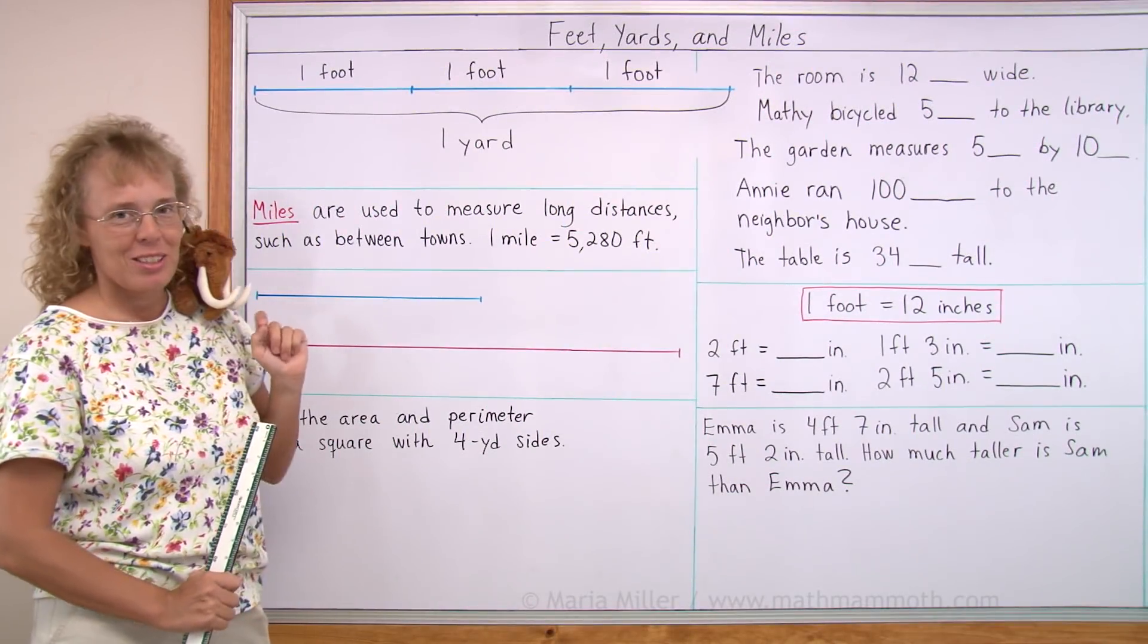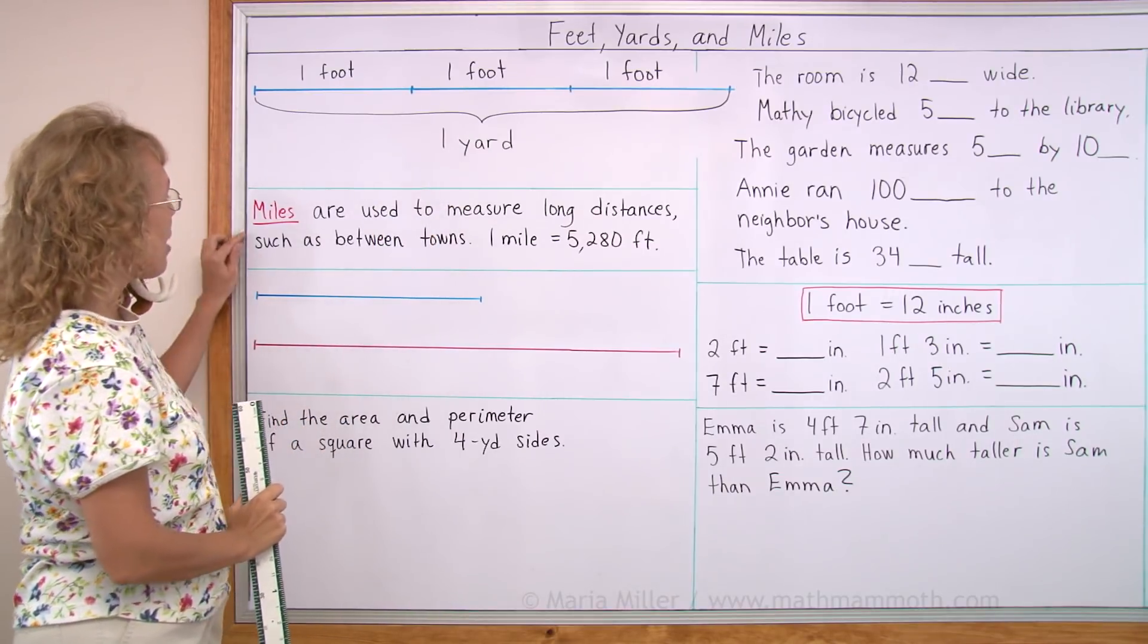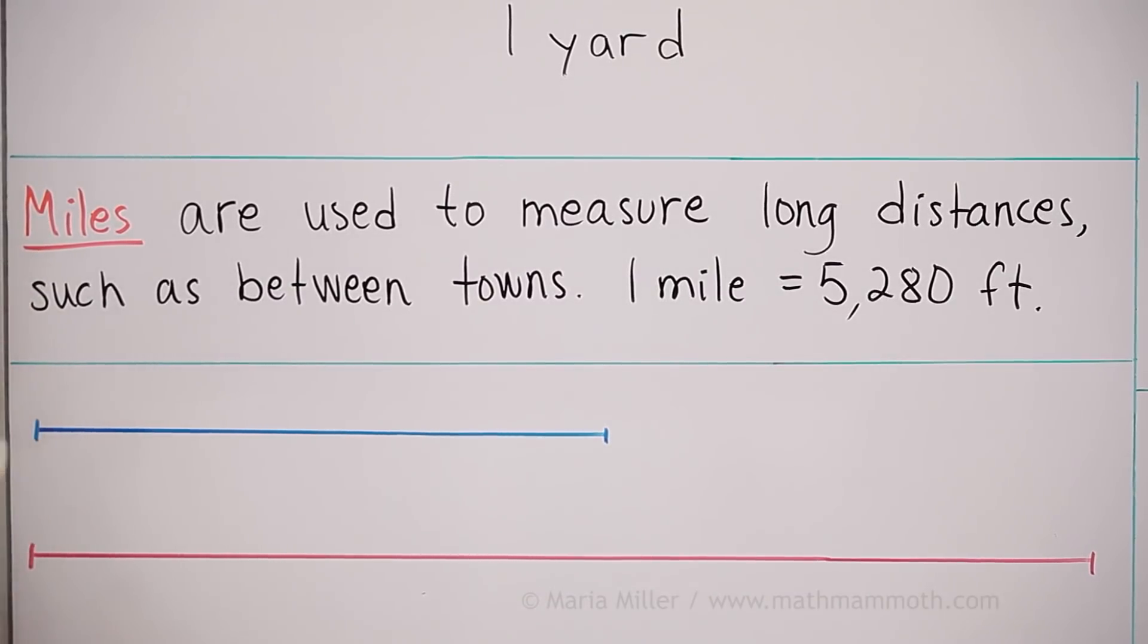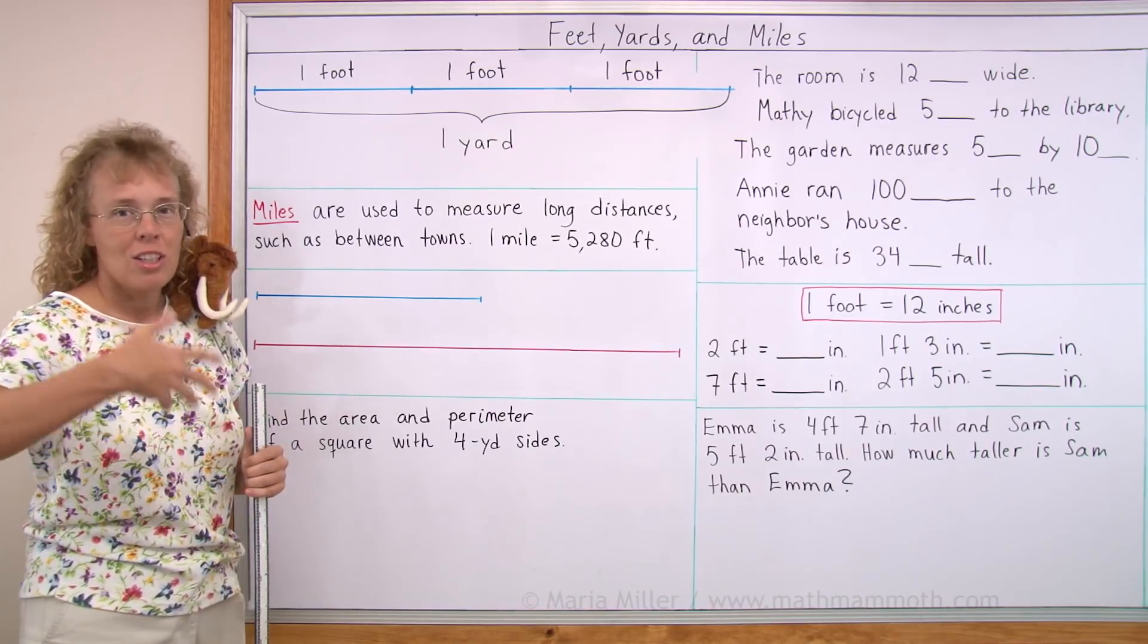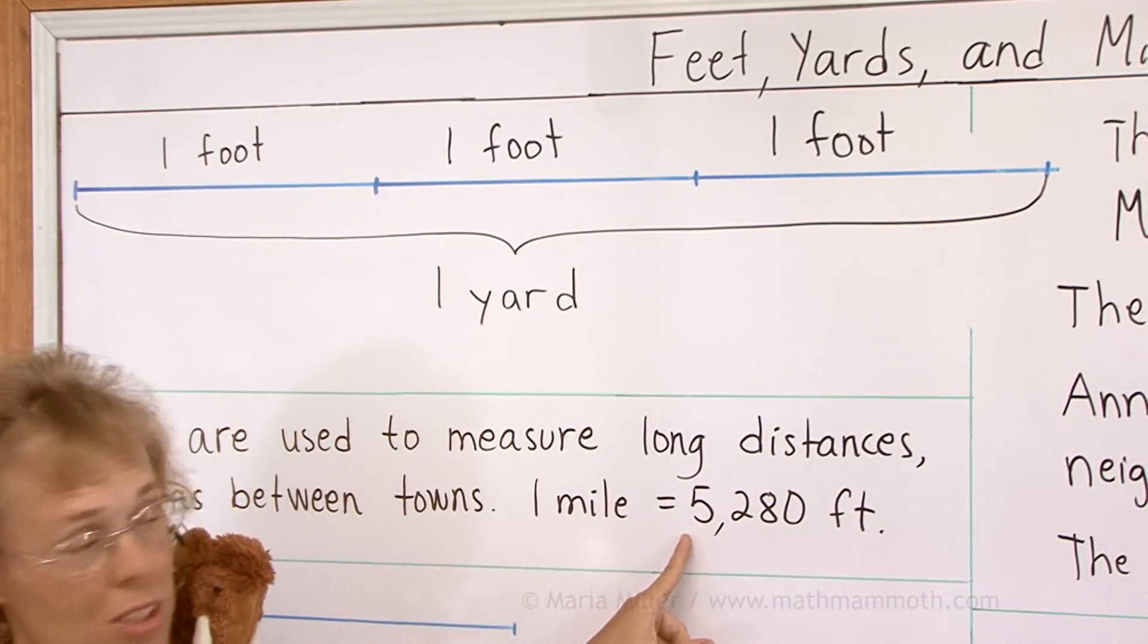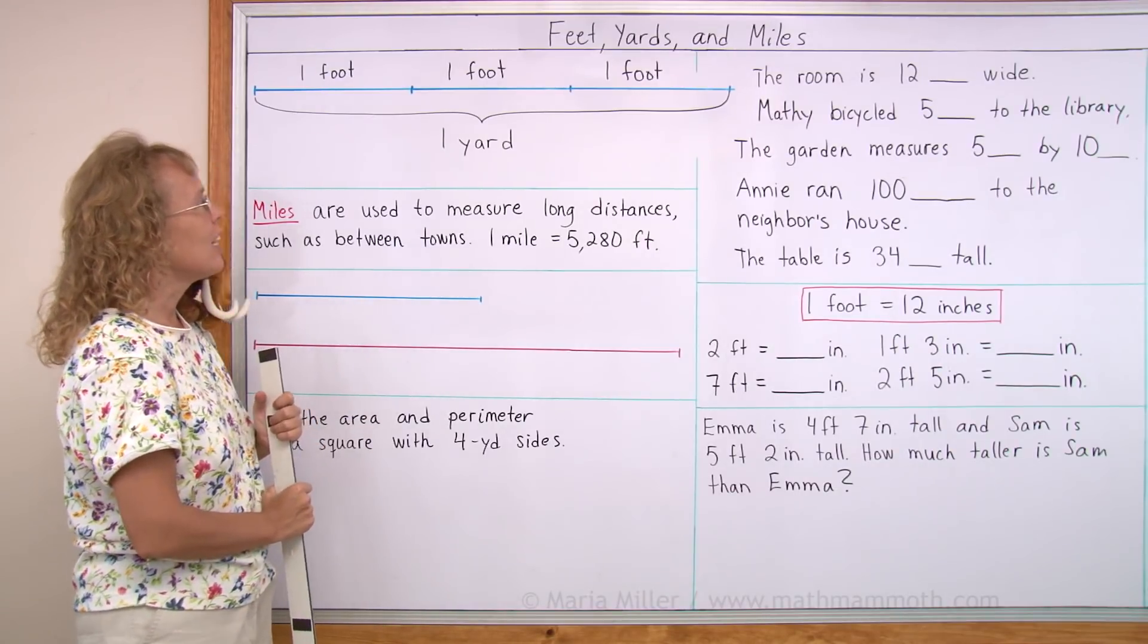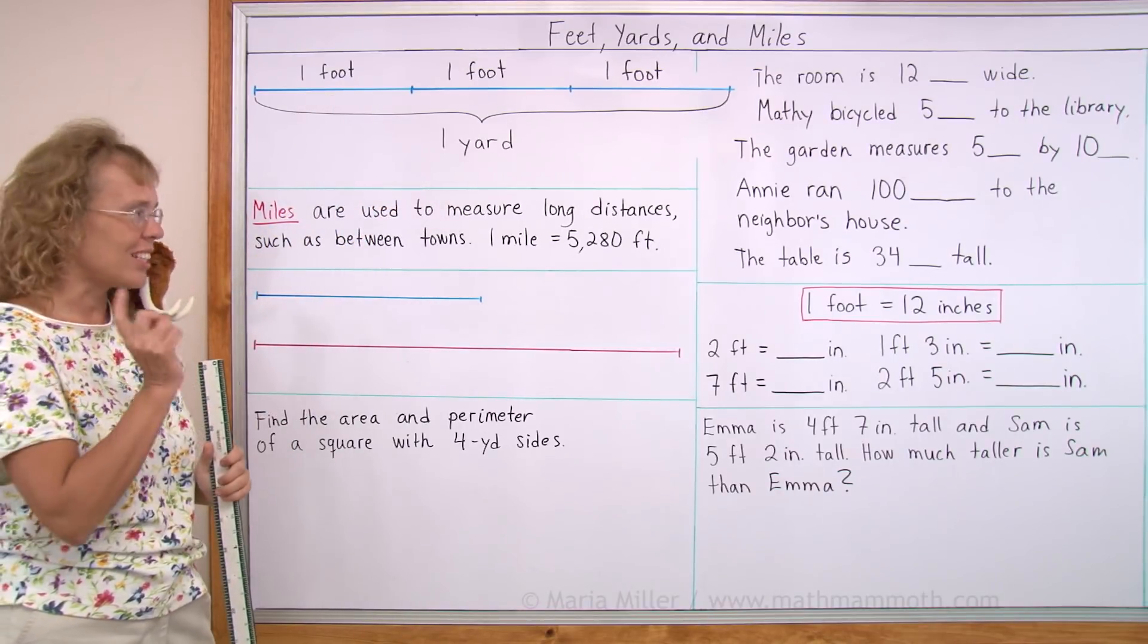Now, one more unit. We have looked at inches and feet and yards and then miles. Miles are bigger units yet. Miles are used to measure very long distances, such as between towns, for example, or maybe from your house to the grocery store or something like that. One mile is 5,280 feet. So miles are the big long units. The smallest ones were inches, then was foot, then yard, and then lastly miles.